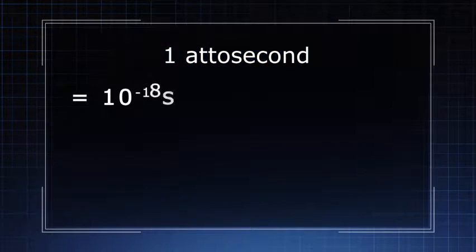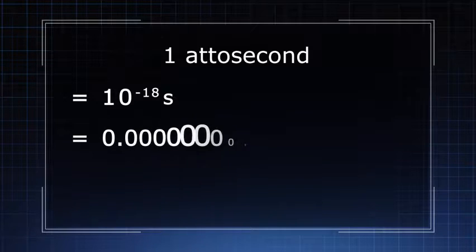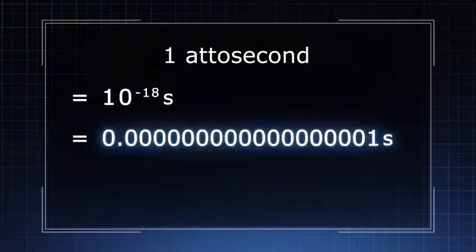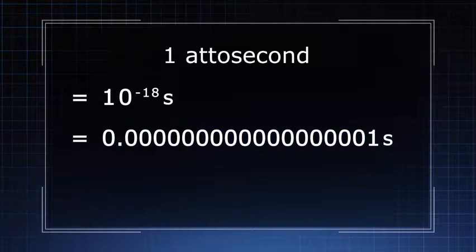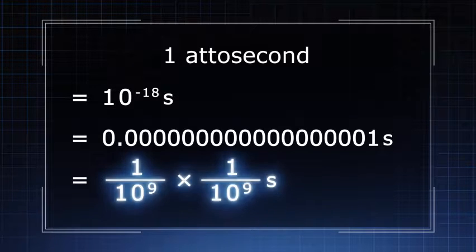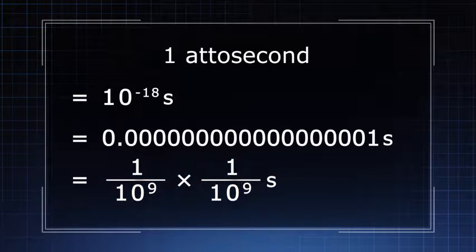An attosecond is equal to 10 to the minus 18th second. If we were to write this in the form of 0.00 and so on, we would need to write 18 zeros before the numeral 1. This is equivalent to a billionth of a billionth of a second, an extremely short time period.